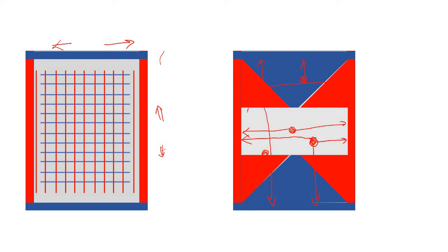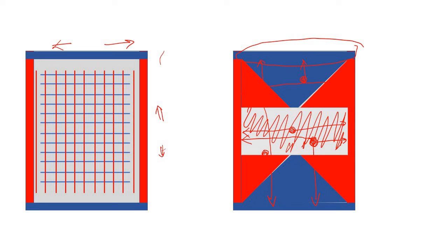Now look at the middle portion. For this gray color portion of the slab, it doesn't matter whether the blue beam is there or not, because all the load from this zone is going to go directly to the red color beam. So if we separate it out, for the middle portion it looks like this — I have simply eliminated the blue beam for this middle portion of the slab.